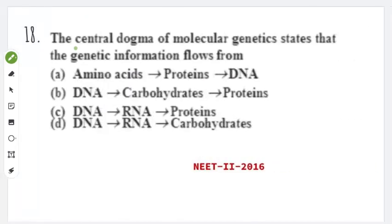Next question: the central dogma of molecular genetics states that the genetic information flows in which order? The right answer is option C — first DNA converts to RNA, and RNA converts to protein. This is a biology question from NEET Phase 2 2016.